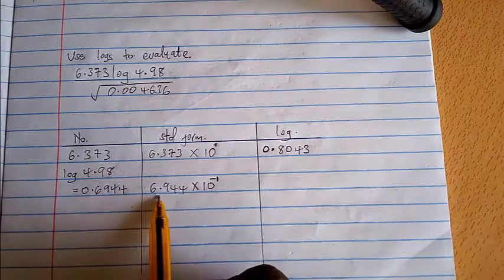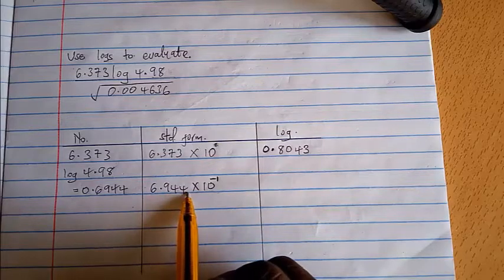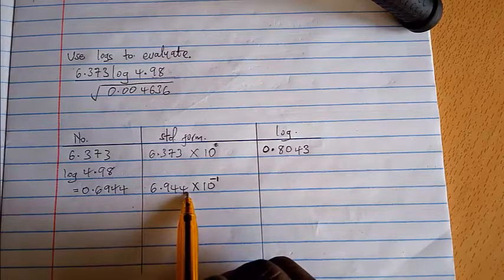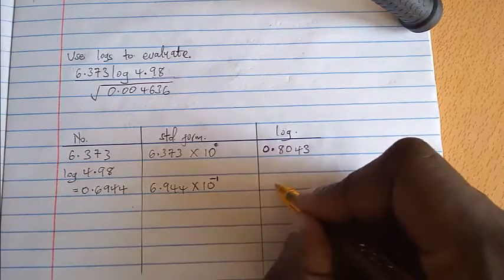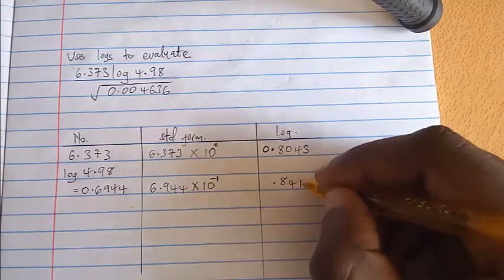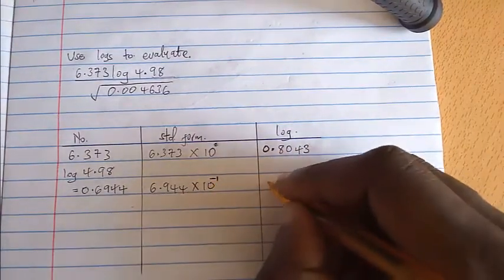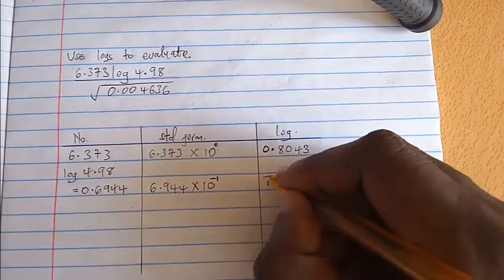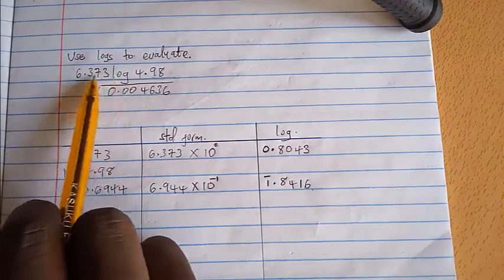Now the logarithm of 6.944 will be 0.8416. Now this negative 1 will be written here as bar 1.